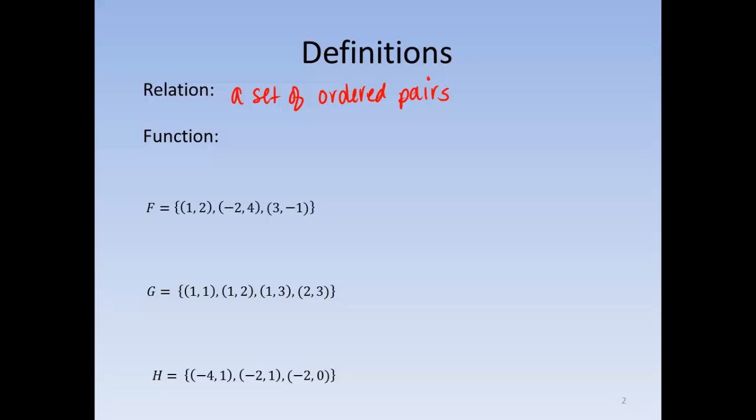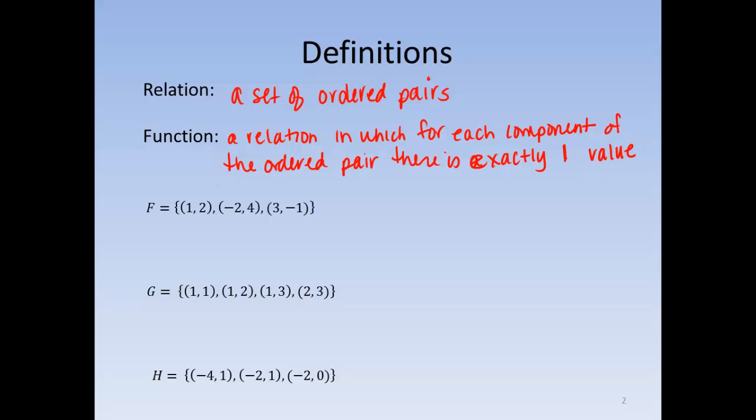A function. A function is a special type of relation. It is a relation in which for each component of the ordered pair, there is exactly one value of the second component.